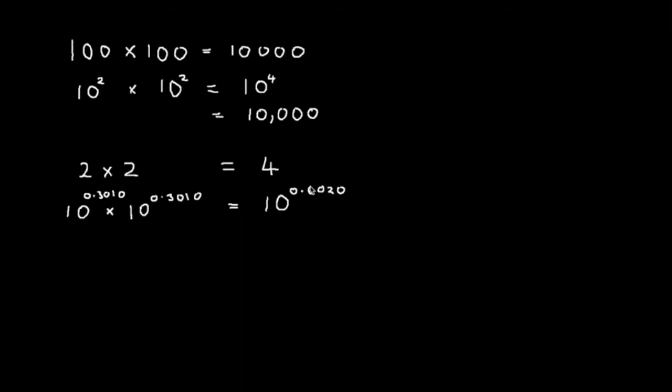So, that's my answer. But, if I want to get it back into a more readable form, I can take the antilog of 0.6020. I do that with the second function 10 to the x on the calculator. So, I ensure that I've got 0.6020 in my display. I press second function 10 to the x and I get a number that looks like, which is basically equivalent to 4.